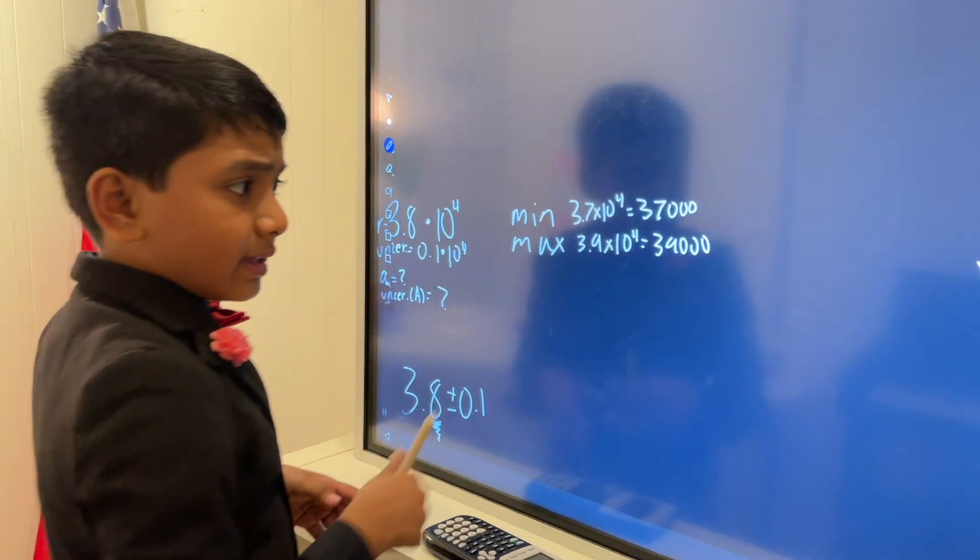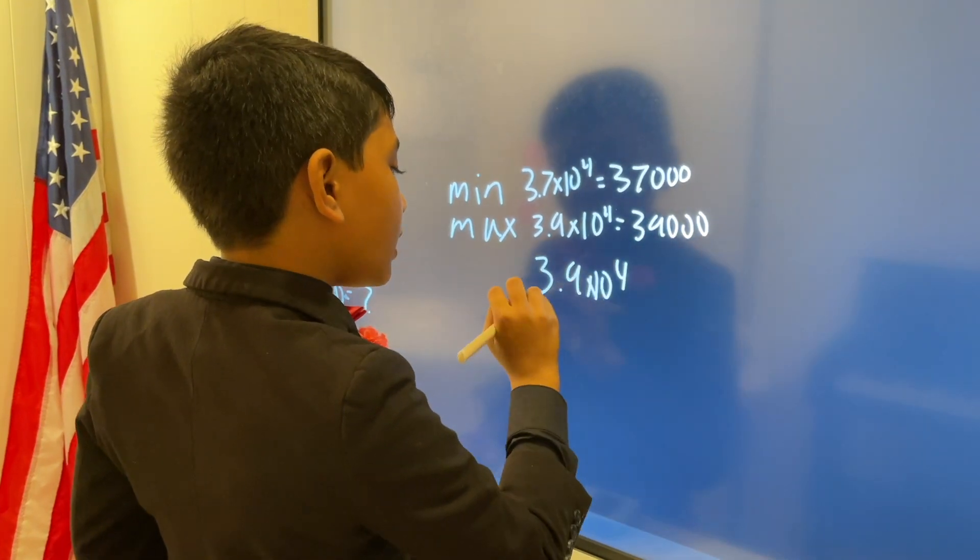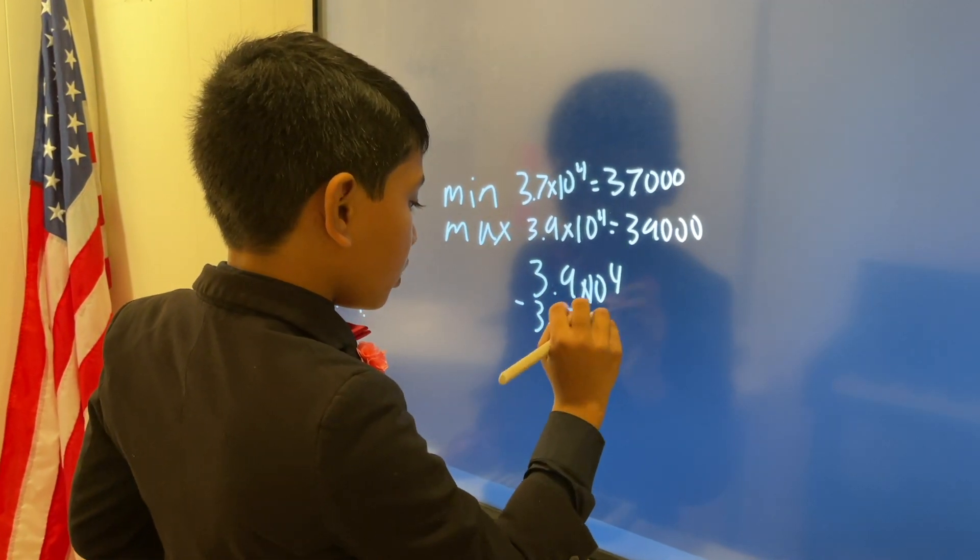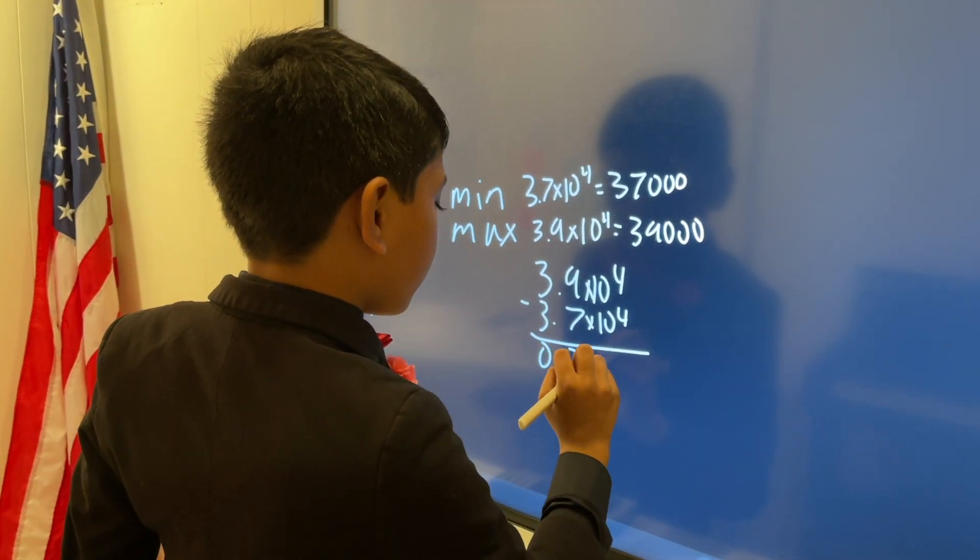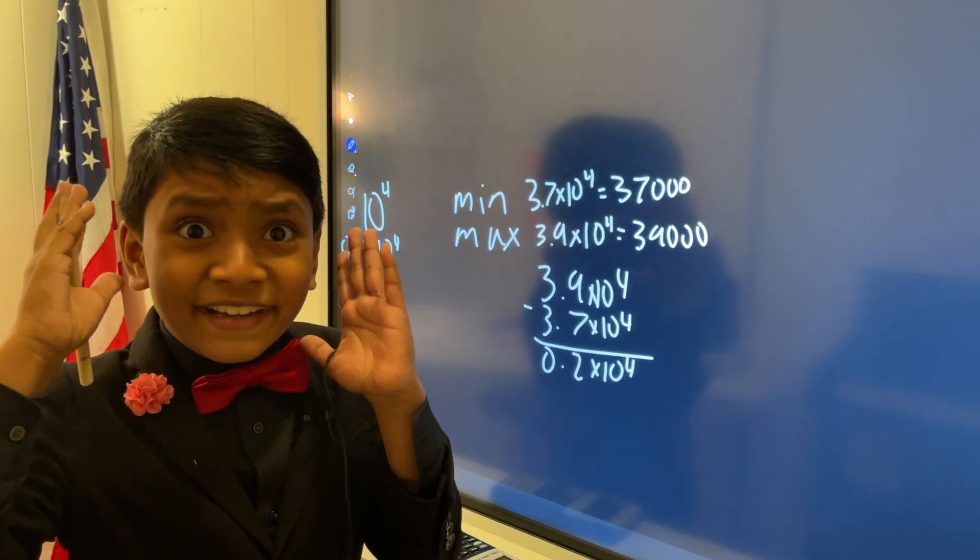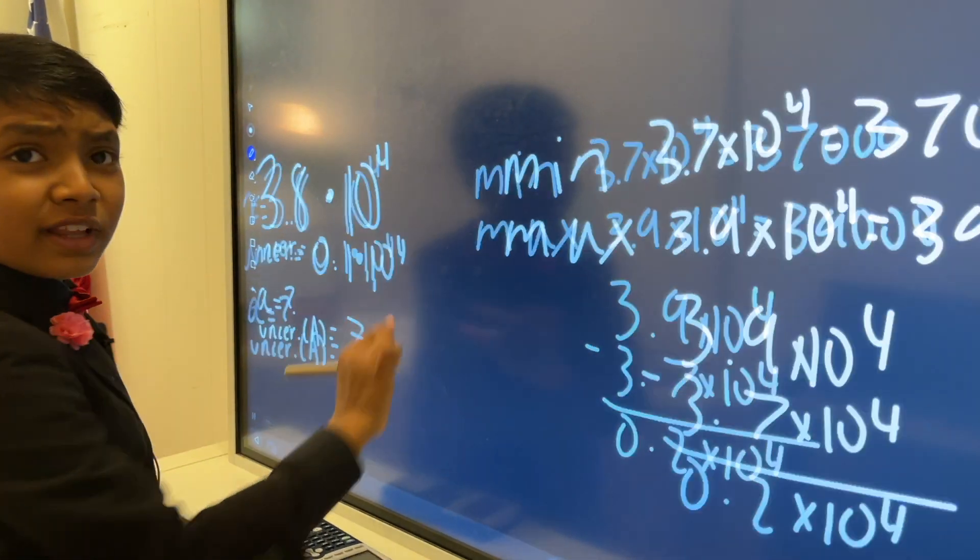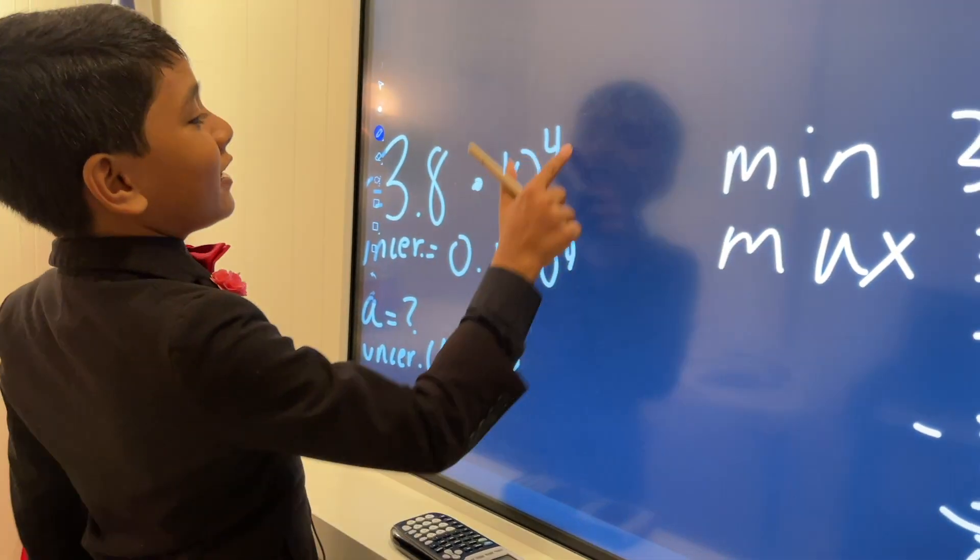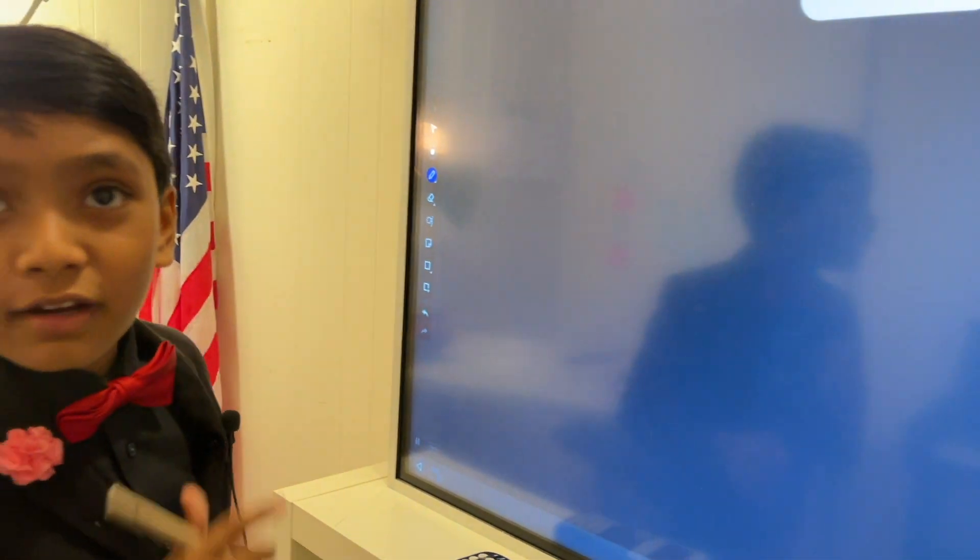Now, notice that there's a difference. 3.9 times 10 to the 4th minus 3.7 times 10 to the 4th is equal to 0.2 times 10 to the 4th. But wait! Isn't that just 2 times our uncertainty?